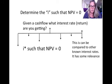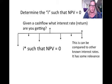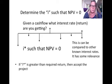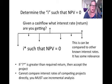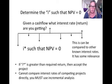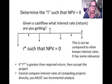IRR is used quite a bit because it's a good way of comparing between alternatives. We all know how much interest we're paying on a loan or might get in a savings account, so the concept of interest rate has relevance for us. If i-star is greater than the required return, we accept the project. We can't directly compare two i-stars against each other; we can only check if it's greater than the required return. When choosing between projects, you must use incremental analysis.